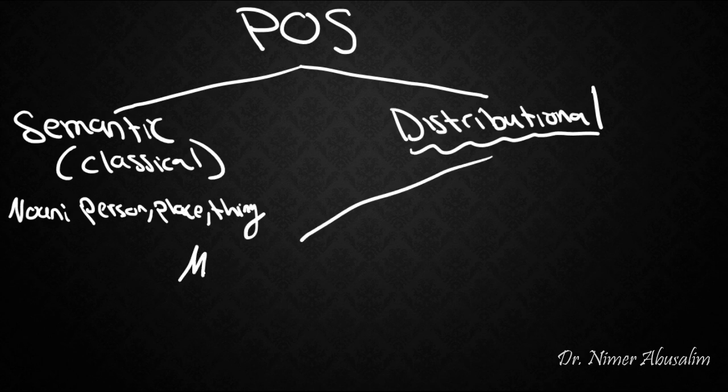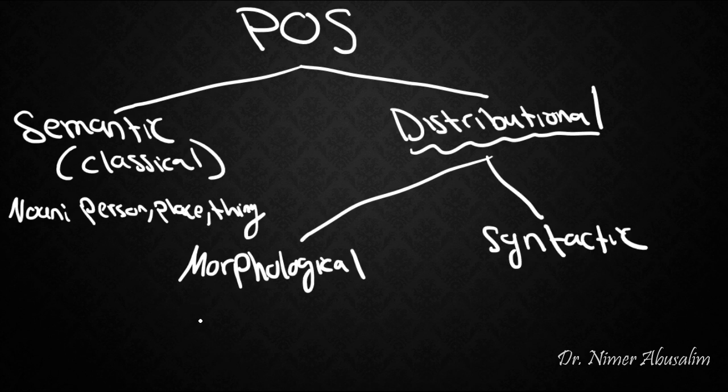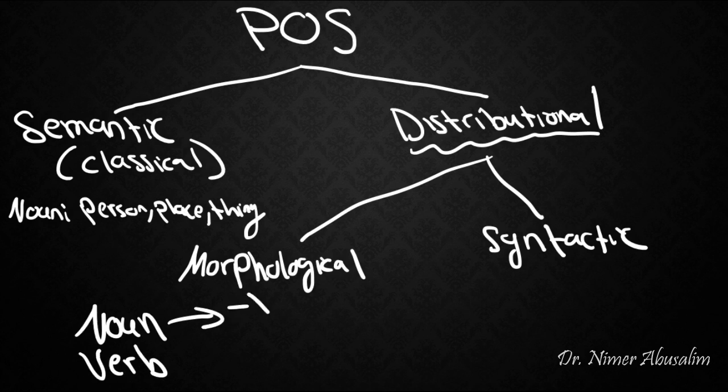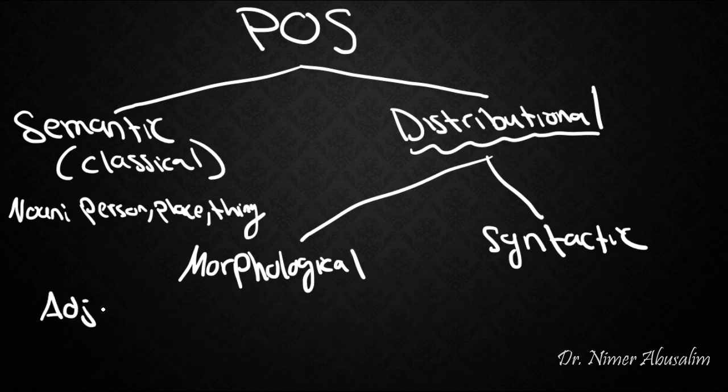Distributional definitions have two types. There are morphological distributions and there's also a syntactic distribution. A morphological distribution could be something like saying that a noun differs from a verb and that a noun can take the suffix tion. It can take the suffix ness at the end. A verb cannot, but a verb differs from a noun that it can take the suffix ed. It can also take the suffix ing. Likewise, an adjective could end with OUS. An adverb could end with LY. So these are morphological distributions. As you can see, these are a bit more reliable and straightforward than these semantic definitions.